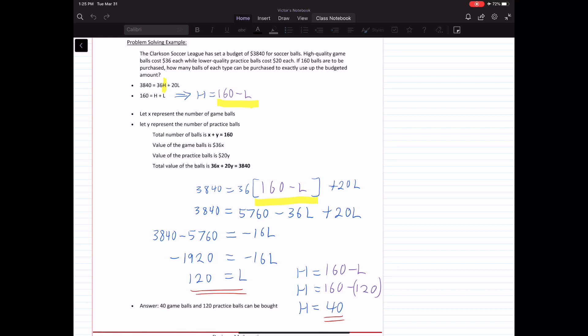Once we know that L is 120, we know that the low-quality ball, we have 120 of them. We can substitute that into 160 equals H plus L. So 160 minus 120 gives you the high-quality ball, high-quality ball equals 40. So we have 40 high-quality balls and 120 low-quality balls. And that is your answer.